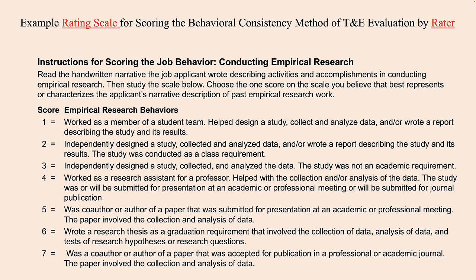The rater is given instructions on how to score the applicant's narrative. For high inter-rater reliability, every rater should come up with a similar — not exact, but similar — score for each narrative. If the applicant simply worked as a member of a student team, designed a study, collected and analyzed the data, and wrote a report, they receive a score of one. Look at score level six: wrote a research thesis as a graduation requirement that involved collection of data, analysis of data, and tests of research hypotheses or research questions. We think this applicant should get a score of six. In fact, if the hypotheses were supported and the applicant tried to get the study published, they would earn a score of seven — the highest score available.